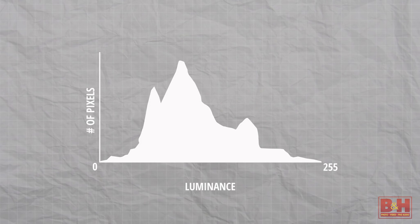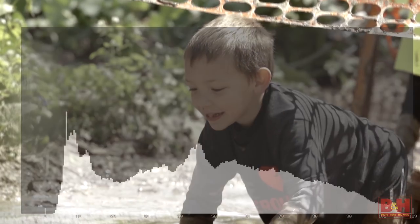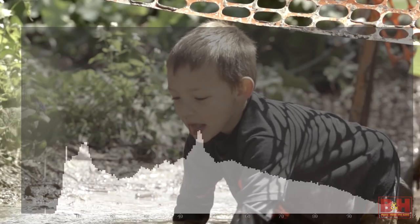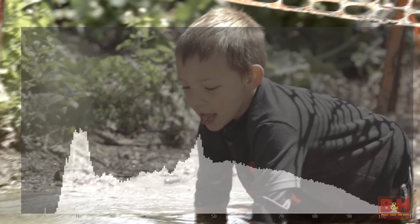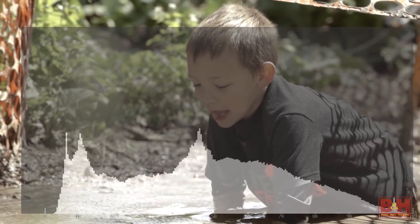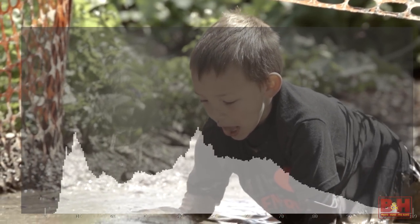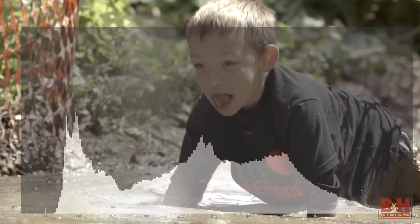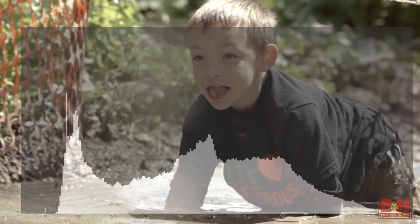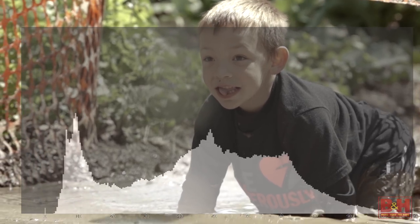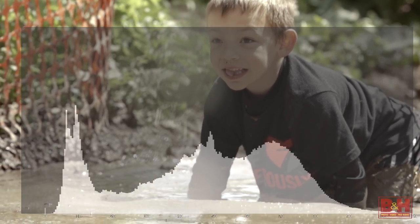This tells us if the brightness range of a given scene will fit the camera's dynamic range. If the entire graph fits between the left and right margins, we know we're not losing any information because no part of the image is too dark or too bright.